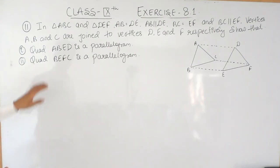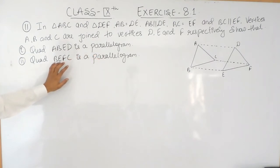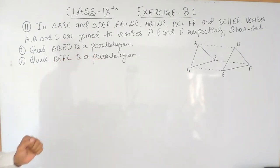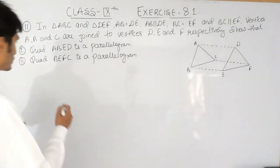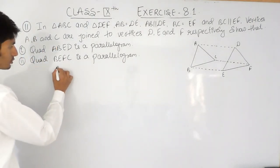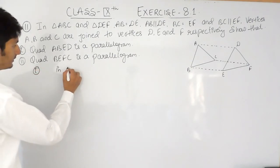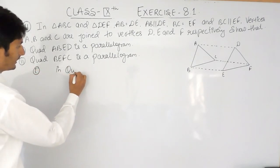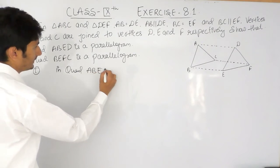We have to show that quadrilateral ABED is a parallelogram, and quadrilateral BEFC is also a parallelogram. Now, first of all, let's talk about the first part — in quadrilateral ABED.